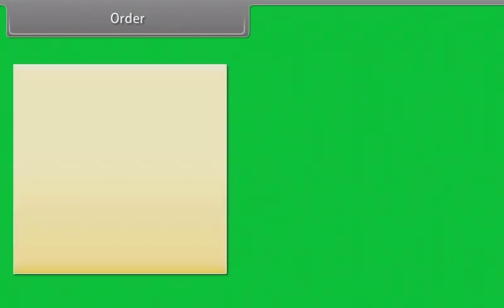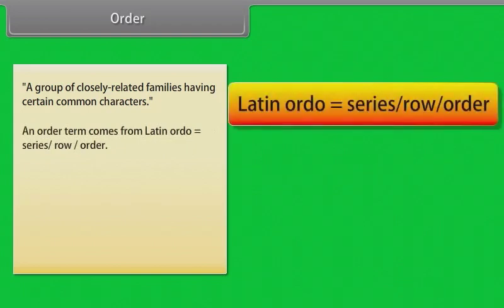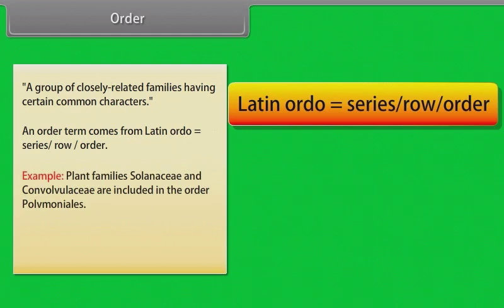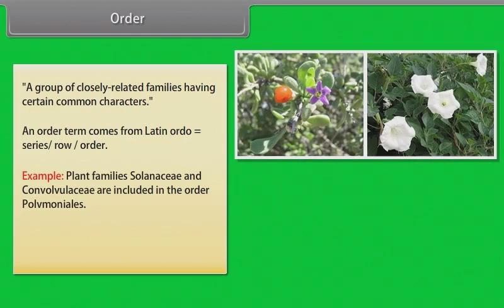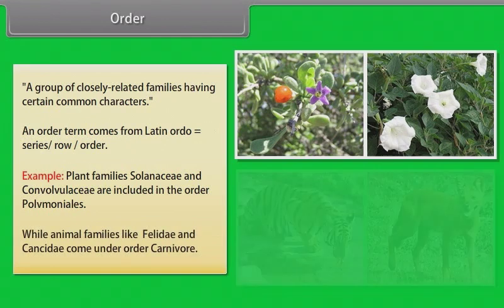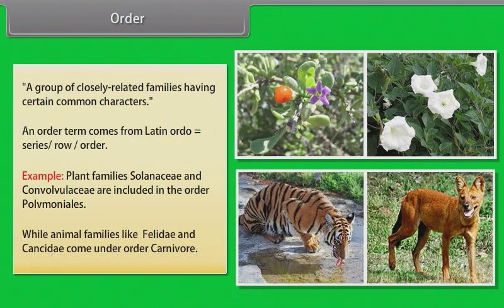An order is a group of closely related families having certain common characters. The term order comes from Latin ordo meaning series, row, order. For example, plant families Solanaceae and Convolvulaceae are included in the order Polemoniales, while animal families like Felidae and Canidae come under order Carnivora.